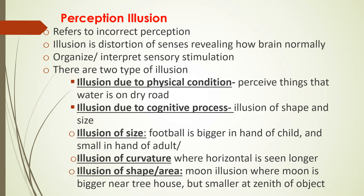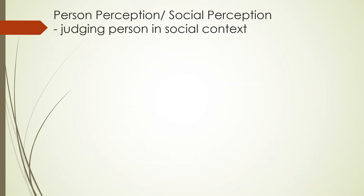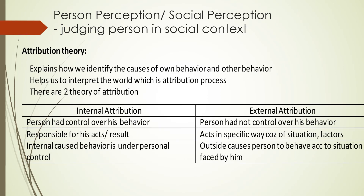Person perception or social perception involves judging a person in a social context. Attribution theory explains how we identify the causes of our own behavior and others' behavior, which helps us interpret the world through the attribution process. There are two types of attribution: internal and external. Internal attribution means the person has control over their behavior and is responsible for the result. External attribution means the person does not have control over their behavior and acts in a specific way due to situational or outside factors.